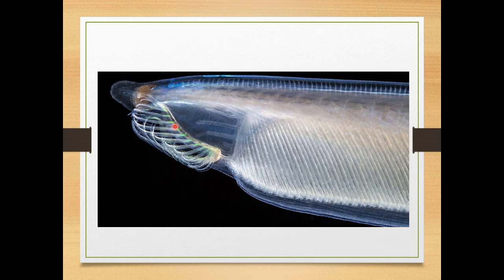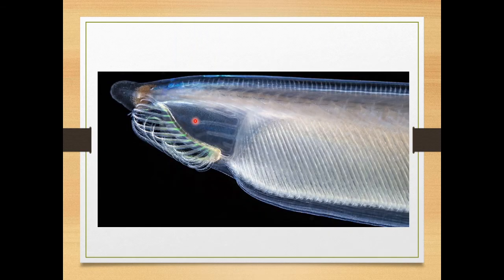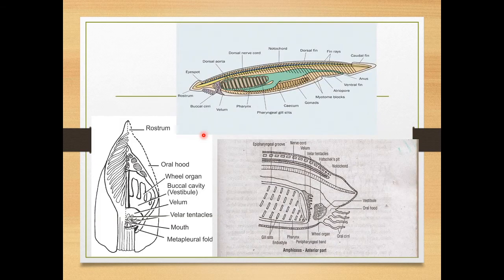The edges of the oral hood are surrounded by a series of ciliated tentacular processes called oral cirri, which help in the movement of water. Oral cirri are also known as buccal cirri. In the center of the oral hood there is the mouth, which opens into the inner side.